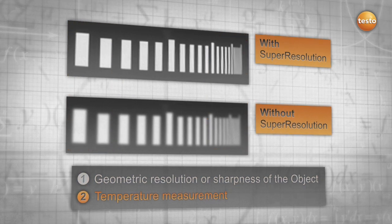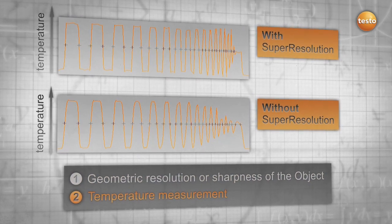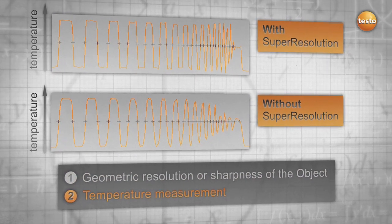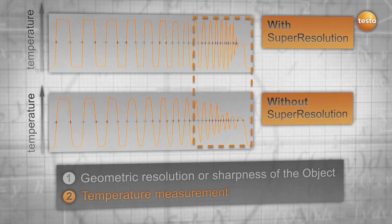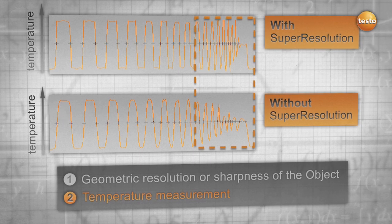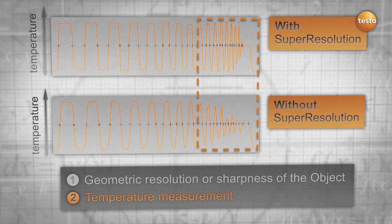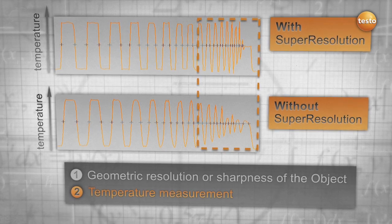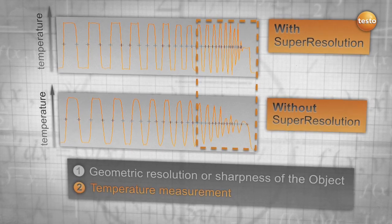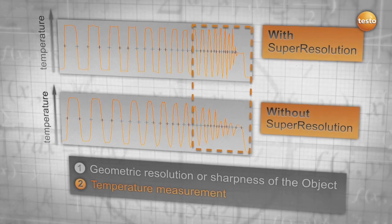A similar effect can be observed when we analyze the accuracy of the measured temperature. Without super-resolution, the temperature is not correctly displayed where the slots get tighter, and the thermographer might be in danger of logging in wrong numbers, which might lead to wrong conclusions. With super-resolution, the measurement, even of tiny structures, remains overall more accurate.